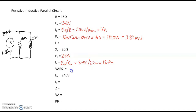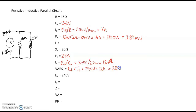Reactive power is calculated similarly to the true power formula: the voltage across the inductor times the current flowing through the inductor — 240 volts times 12 amps — which gives us 2,880 volt-amps reactive.